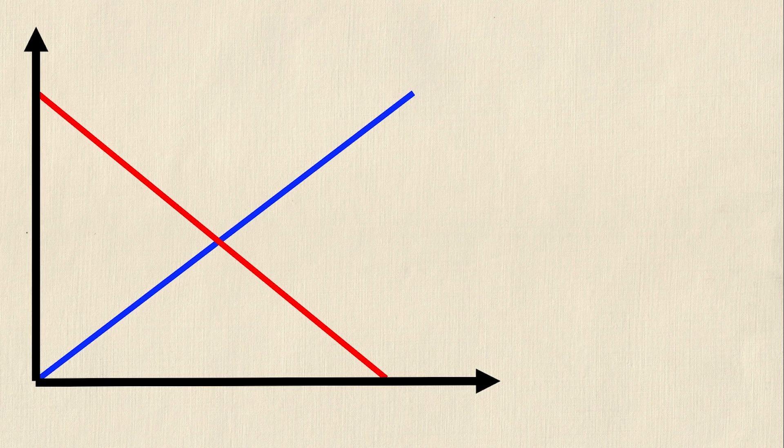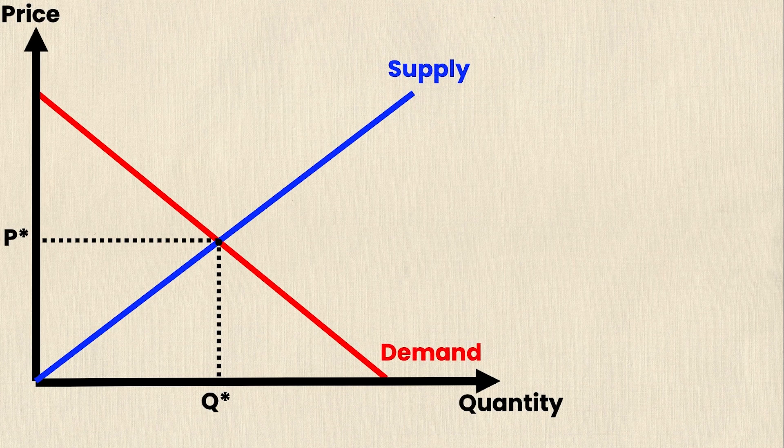So to begin our example let's draw our basic supply and demand graph. We'll start with the axes, the actual supply and demand curves, and then labeling everything.